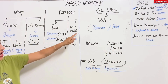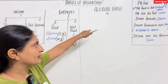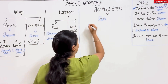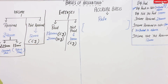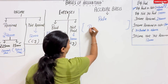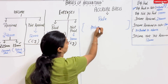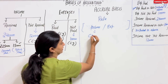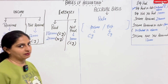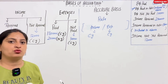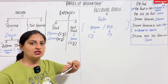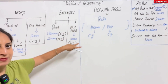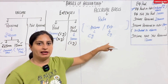Next, we will make the chart for accrual basis. The rule for accrual basis is: for income and expenses, we take only the amounts where 'current year' is written — those amounts belong to the current period.